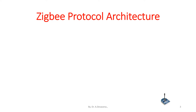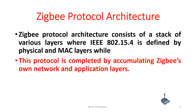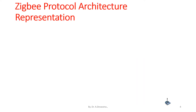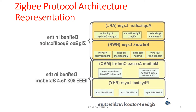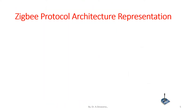ZigBee protocol architecture consists of a stack of various layers, where IEEE 802.15.4 defines the physical and MAC layers, while the protocol is completed by adding ZigBee's network and application layers. The ZigBee protocol architecture is represented by ZigBee lower layers and ZigBee upper layers. The lower layers are defined in the IEEE 802.15.4 standard and the upper layers are defined in the ZigBee specifications.